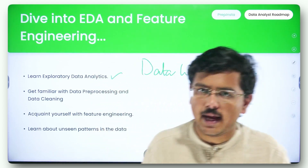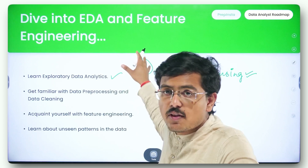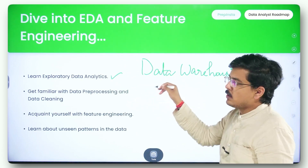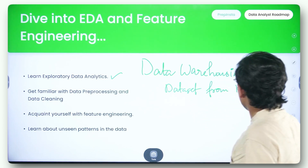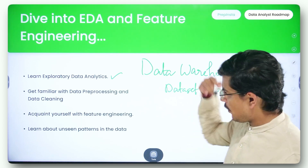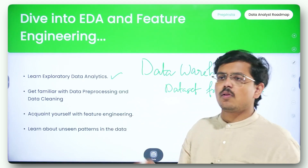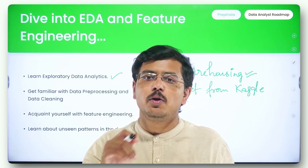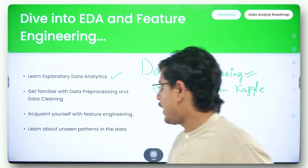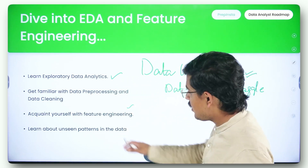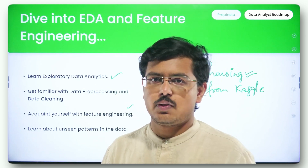Learn using this roadmap and try building projects which are in line with it. For example, perform EDA on any dataset from Kaggle — download the IMDB reviews dataset, perform data preprocessing and data cleaning on it. Acquaint yourself with feature engineering: it involves feature selection — which features should be used, how those features should be used, what formulas and statistical algorithms and models should be applied. Learn how to figure out unseen patterns in data and how to meaningfully get insights from those patterns.